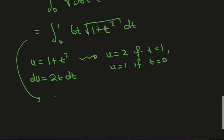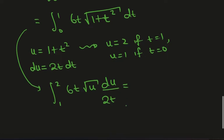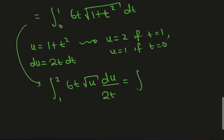So what this integral becomes is the integral from 1 to 2 of 6t times the square root of u. Then dt is now du over 2t. The t's cancel, so I get an integral from 1 to 2 of 3 square root of u, but I'll just write that as u^(1/2) du.